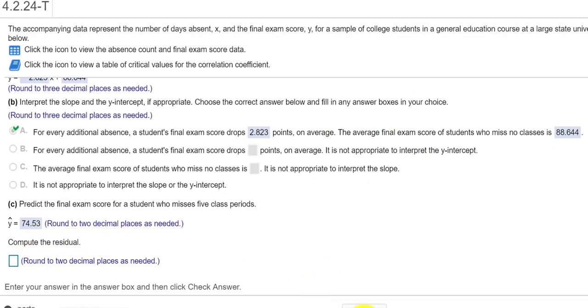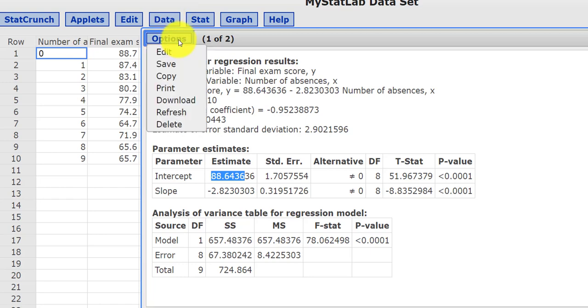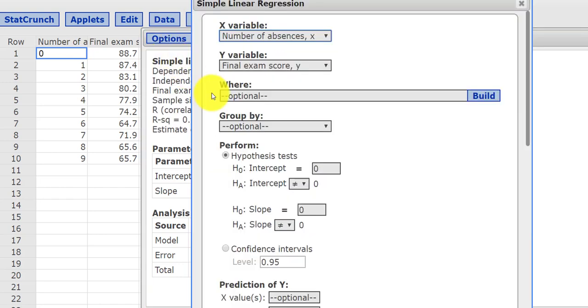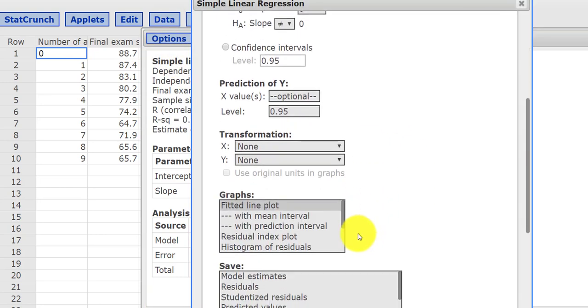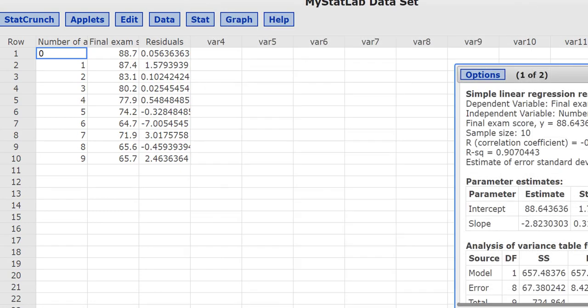Compute the residual. We can do that in StatCrunch. Let's open that up. If I go back to Options, Edit. If you look down here, where it says Save the Residuals, I can click Residuals, press Compute. And notice I have a new column here. It says Residuals.